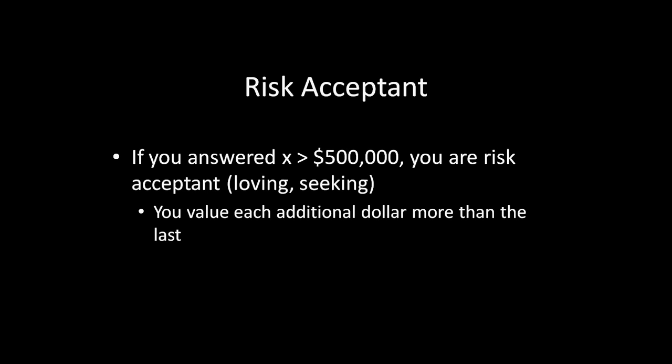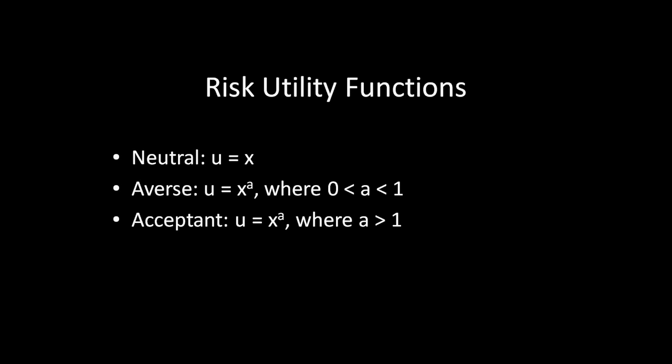One interesting question is: can we represent these sorts of risk preferences with utility functions? And the answer is yes — it's actually very easy. One common way to model these risk utility functions is to use exponents. If you're risk neutral, your expected utility is simply X. If you're risk averse, you get a value of X to the A, where A is some number between 0 and 1. When you have an exponent less than 1, the function essentially starts acting like a root function — if A equals one-half, you're square rooting X; if A equals one-third, you're cube rooting X. The smaller A is, the more risk averse you are, whereas when A approaches 1, you're getting closer and closer to risk neutral, since U equals X at A equals 1.